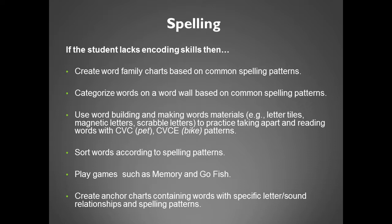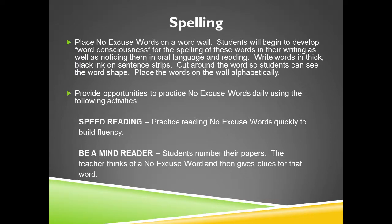Sort words according to spelling patterns. Play games such as memory and go fish. Create anchor charts containing words with specific letter-sound relationships and spelling patterns. Place no-excuse words on a word wall. Students will begin to develop word consciousness for the spelling of these words in their writing, as well as noticing them in oral language and reading. Write words in thick black ink on sentence strips. Cut around the words so students can see the word shape. Place the words on the wall alphabetically.